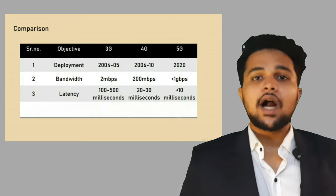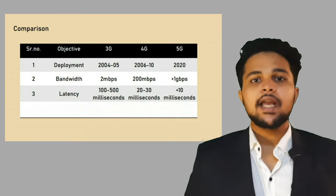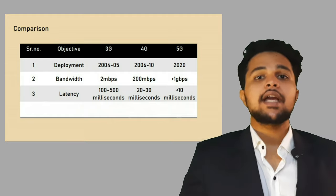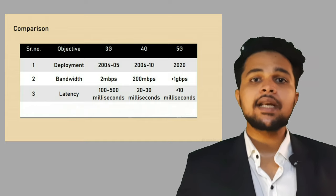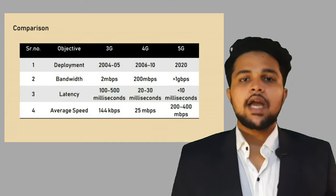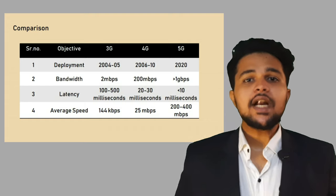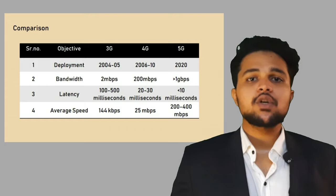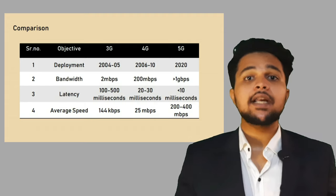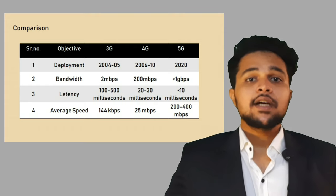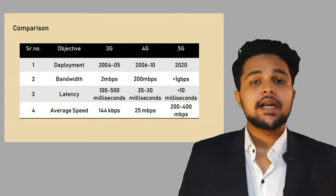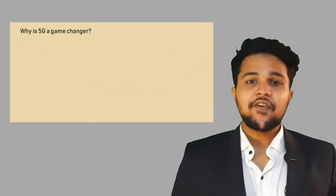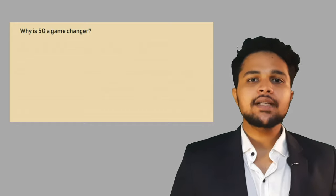In 3G, latency was 100 to 500 milliseconds. In 4G, it was about 20 to 30 milliseconds, whereas in 5G it is less than 10 milliseconds. The average speed of 3G was 144 Kbps, whereas 4G is 25 Mbps, and 5G is 200 to 400 Mbps — which is extremely fast.